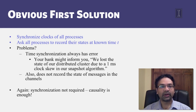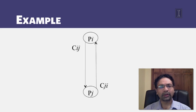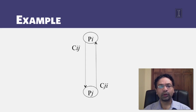Thankfully, causality comes to our rescue again. We don't really need time synchronization here — we can make do with causality. Let's see an example of a system moving from one global snapshot to another via a series of causal steps. In this system I have two processes, PI and PJ, with two channels going each way: CIJ goes from PI to PJ, and CJI goes from PJ to PI.